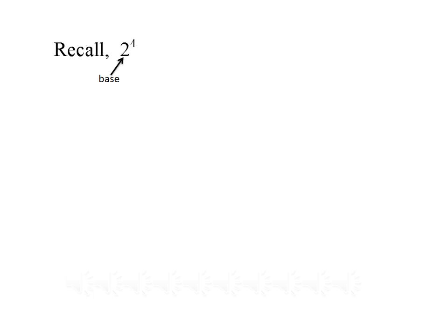The number at the bottom, which is being raised to another number, is called the base, and the power which the base is raised to is called the exponent. By definition, the exponent basically means take the base and multiply it by itself that many times. So, for example, 2 to the 4th is the same thing as multiplying 2 times 2 times 2 times 2 — multiplying 2 by itself 4 times.